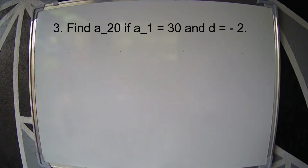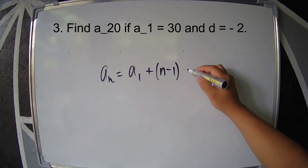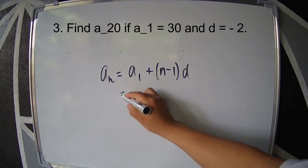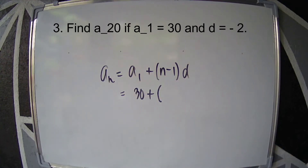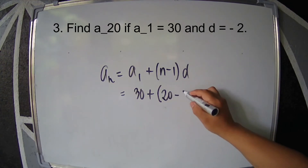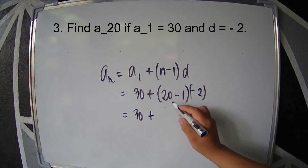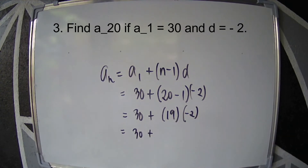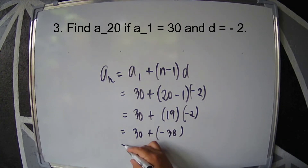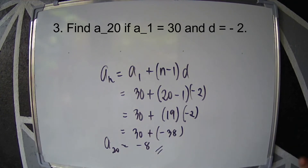Example 3: Find the 20th term if the first term is 30 and the common difference is negative 2. Using the formula, a sub n equals a sub 1 plus the quantity n minus 1 times D. Substitute: a sub n equals 30 plus the quantity 20 minus 1 times negative 2. So 20 minus 1 is 19, times negative 2 is negative 38. Then 30 plus negative 38 is negative 8. So the 20th term is negative 8.